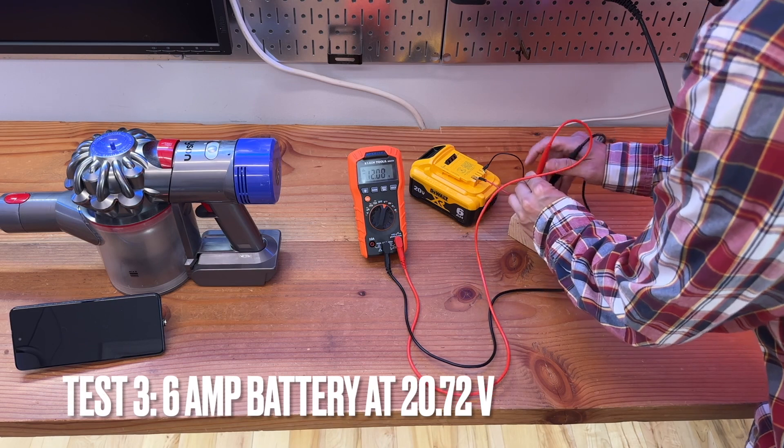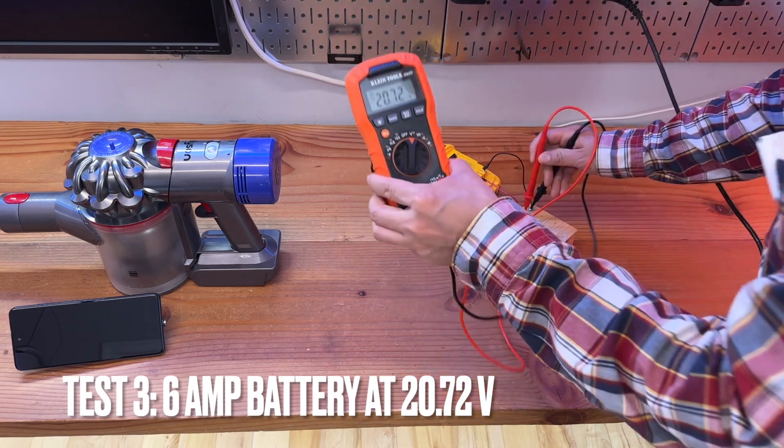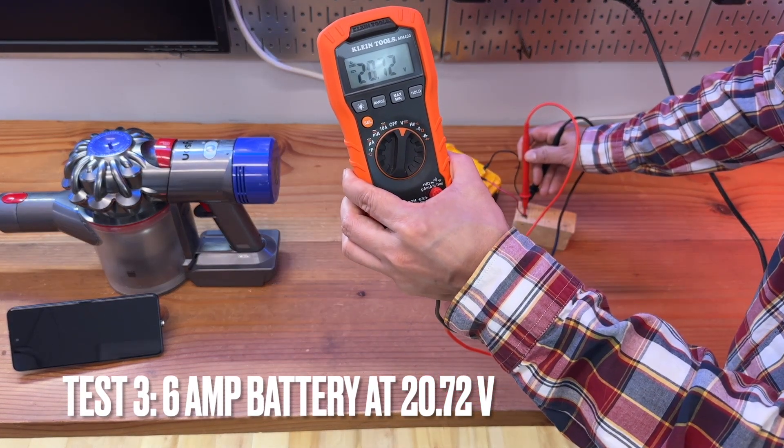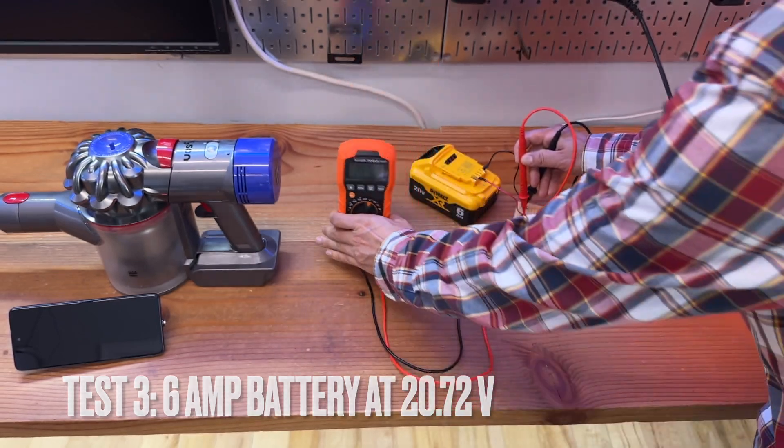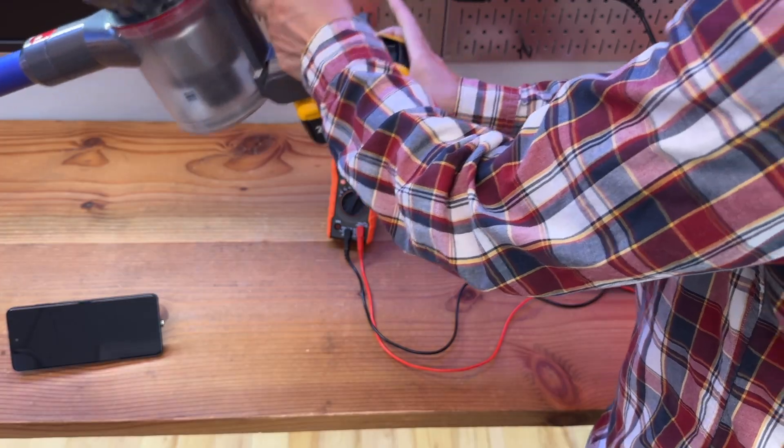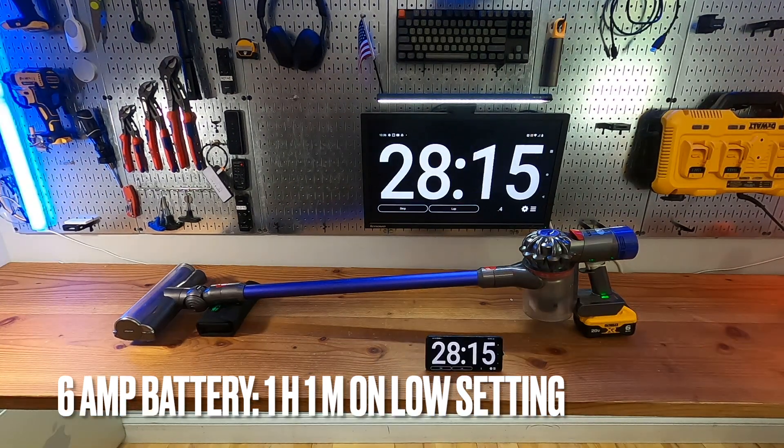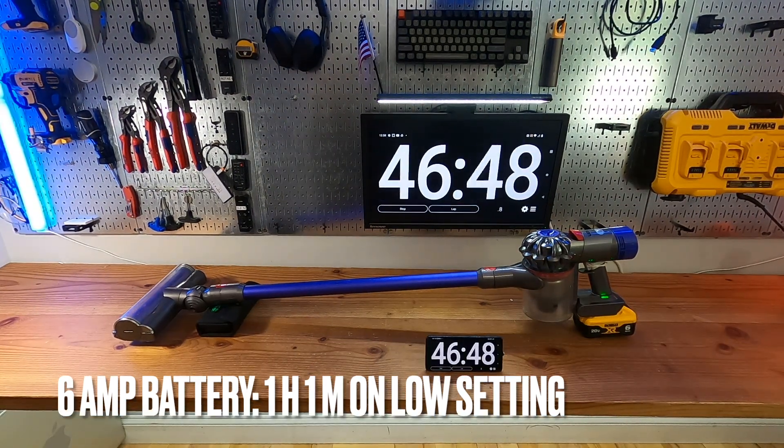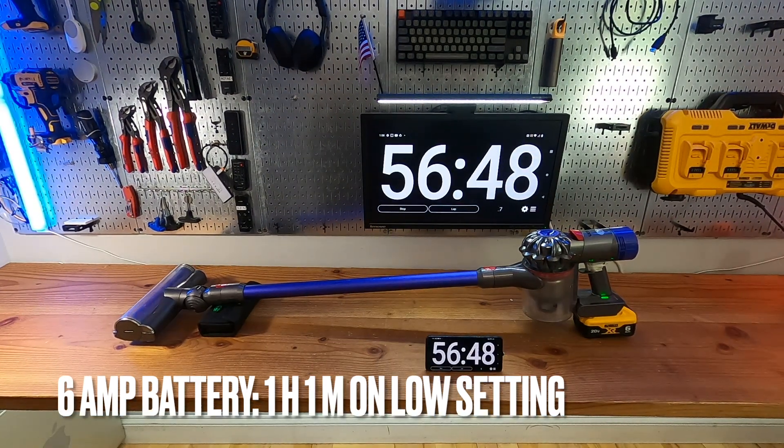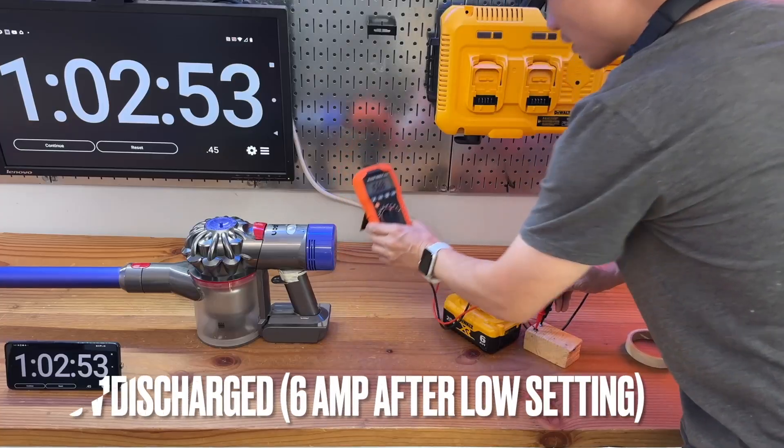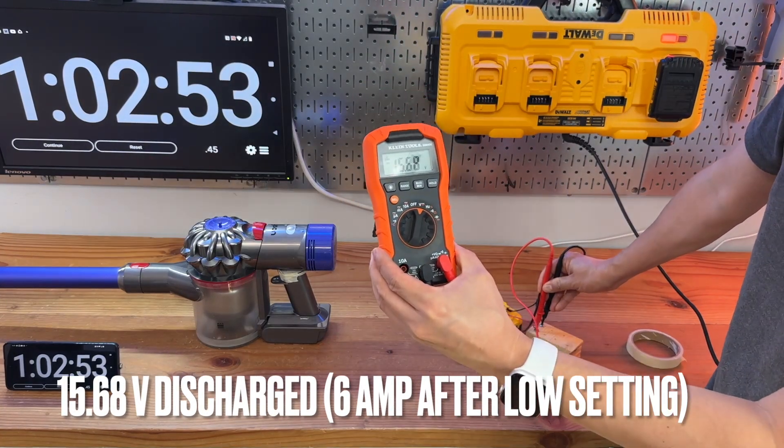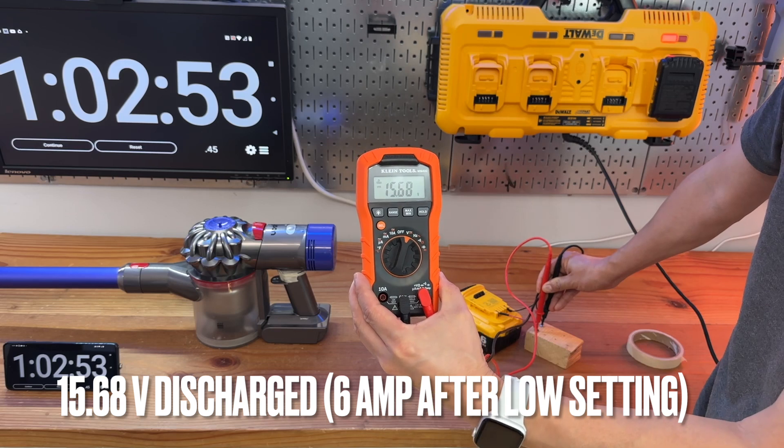A freshly recharged 6A battery, 20.72 volts. The 6A battery lasted 1 hour and 1 minute on the low setting. This is more than enough for daily use, but it's also heavier. The cutoff voltage is 15.68 volts.